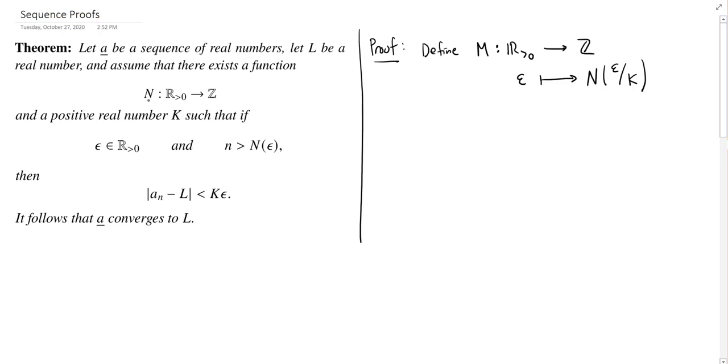Now, for me to show that A converges to L, I needed to define this function M. And then I need to show that it satisfies these conditions, only there would be no K.